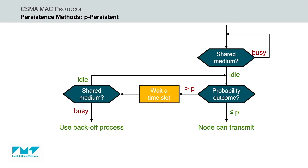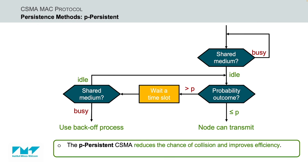To summarize, here is the flow diagram for the P-persistent CSMA method. The transmitting node continuously senses the shared transmission medium. If it is idle, it transmits with probability P and delays for a time slot with probability 1-P. In the following slot, if the medium is idle, it repeats the whole logic cycle again; if it is busy, it uses the back-off process. The P-persistent CSMA approach combines the advantages of the one-persistent and non-persistent CSMA access modes — it reduces the chance of collision and improves the efficiency of the network. P-persistent CSMA is used in CSMA-CA systems, including Wi-Fi.